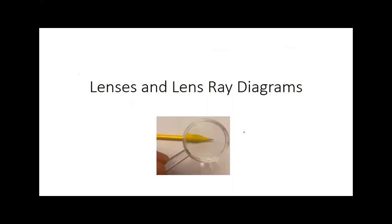We're going to do ray diagrams, but today we're looking at lenses. Yesterday we looked at mirrors, but when you look at a lens, notice something different. Where's that pencil you see right there? Is it on your side or on the other side of the lens? See how it's on the other side? This is going to change the real versus virtual side with ray diagrams.